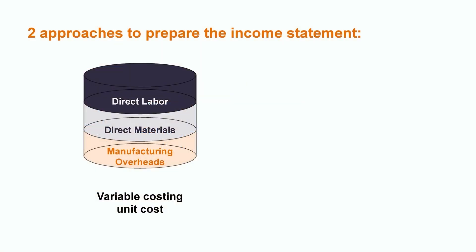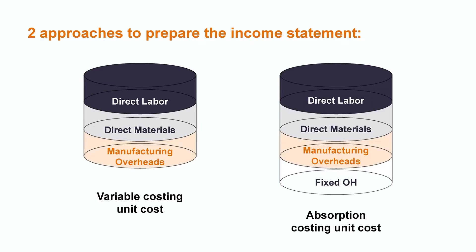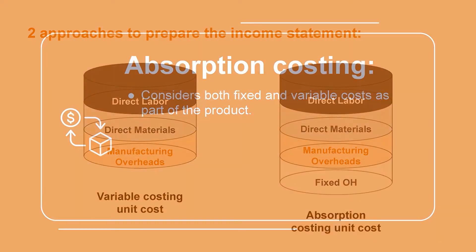To prepare the income statement, manufacturing companies can decide to use either variable costing or absorption costing. The main difference between the two costing approaches is how manufacturing costs are assigned to the product. Let's briefly discuss the differences between them.